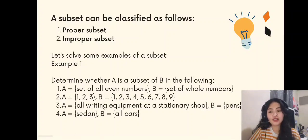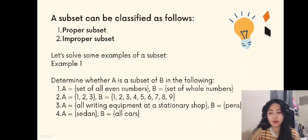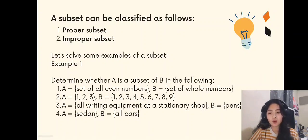Let's solve some examples of a subset. Determine whether A is a subset of B in the following. Number 1: Set A equals the set of all even numbers, and set B equals the set of whole numbers. Number 2: Set A equals {1, 2, 3}, and set B equals {1, 2, 3, 4, 5, 6, 7, 8, 9}. Number 3: Set A equals all writing equipment at the stationary shop, and set B equals pens. Number 4: Set A equals sedan, and set B equals all cars.